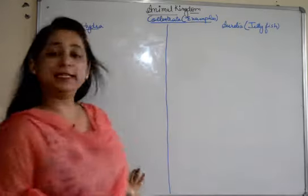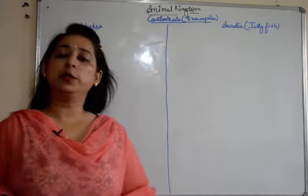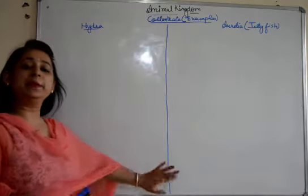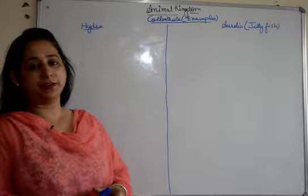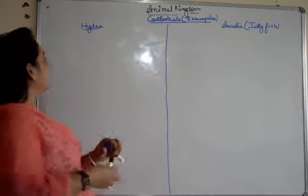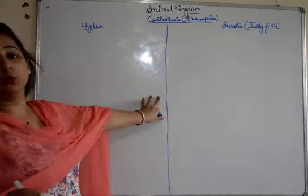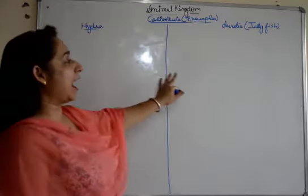So we will start with the examples quickly. Please watch the video till the end because all the important pointers will be there on the board with the diagrams which you can refer for your notes. Starting up, we are going to discuss two examples: Hydra and Aurelia.